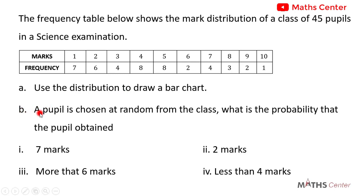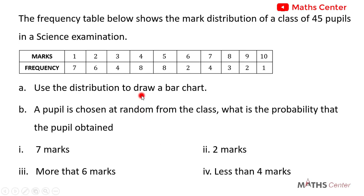The second part of the question is: a pupil is chosen at random from the class. What is the probability that the pupil obtained: I) seven marks, II) two marks, III) more than six marks, and IV) less than four marks? In this video we are going to combine what we have learned under statistics with what we have learned under probability.